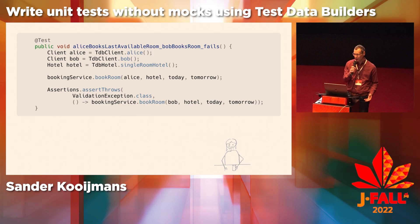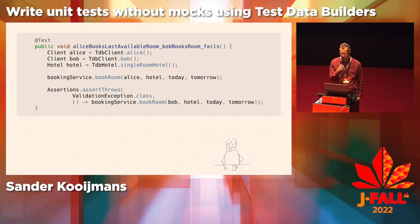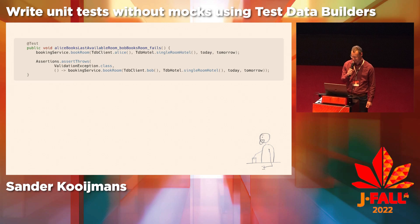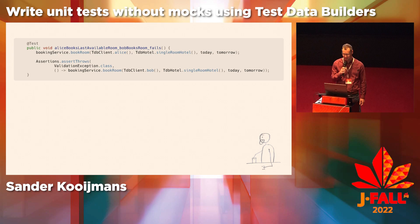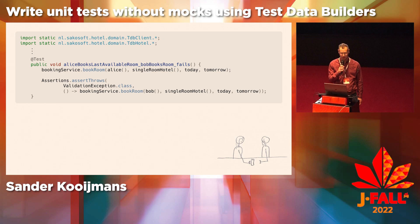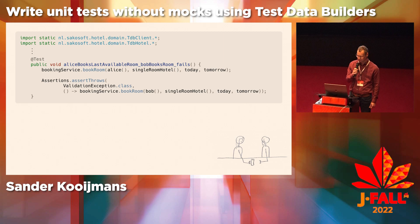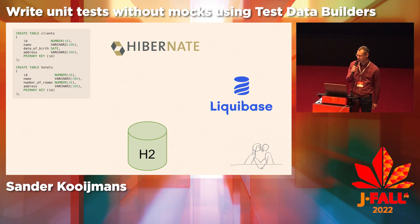Now imagine we add a new field — for instance, we add a rating to the hotel class. The existing tests don't need to be changed; only the test data builder for hotels needs to fill in a default value for the new field. Thanks to the get-or-create behavior, there's no need to use variables. We can save lines by inlining them. And if you're not afraid of static imports, you can make the test even shorter.